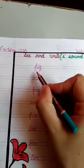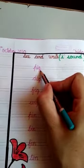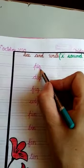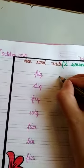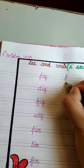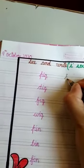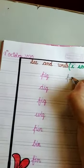First of all, this is pa, ig — pig. Same, we will write here: pa, ig, pig.